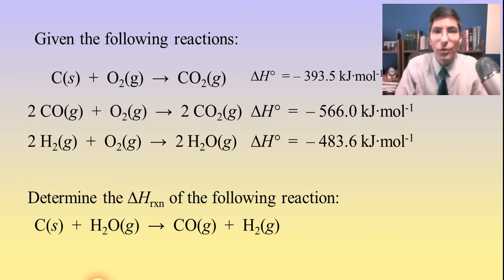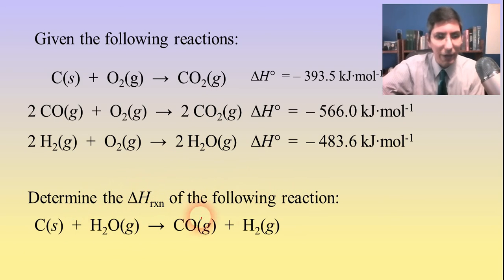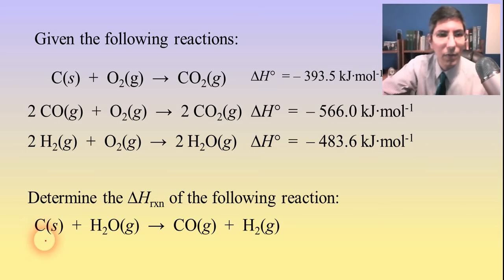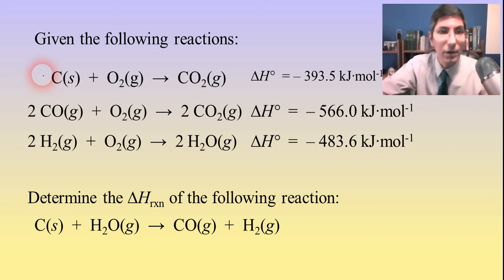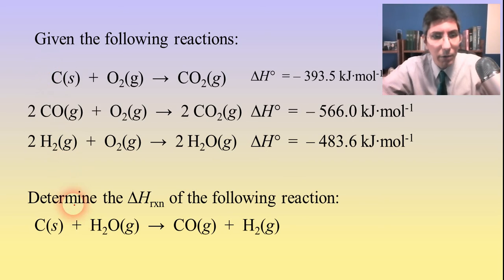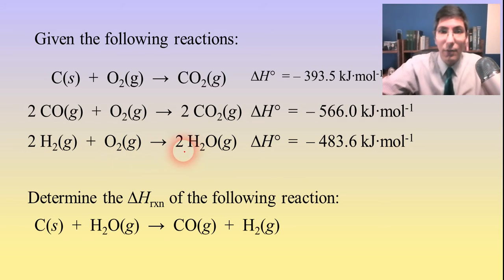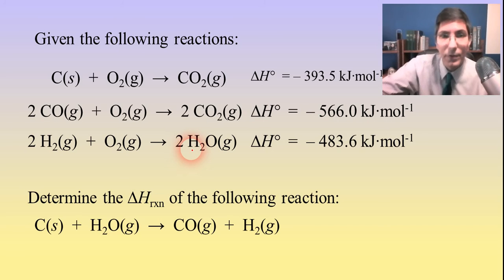This time we're going to step up the intensity and use three reactions. Given these three elementary reactions, we need to determine the delta H of the overall reaction: carbon plus water vapor yields carbon monoxide plus hydrogen gas. Carbon needs to be on the left side, and it only appears in reaction number 1 on the left with a coefficient of 1 — so I can probably leave reaction 1 alone. Water needs to be on the left side, but it only appears in reaction 3 on the right side with a coefficient of 2 instead of 1. So I'll need to flip reaction number 3.